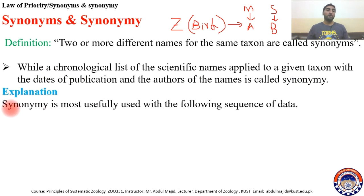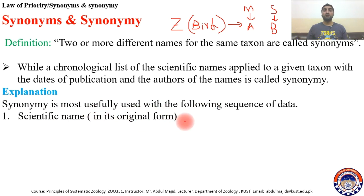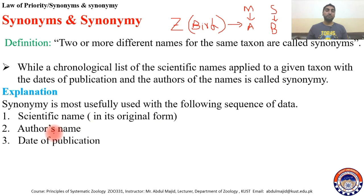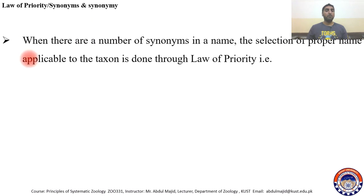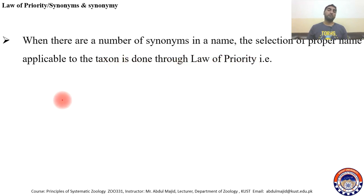Synonymy is most usefully presented with the following sequence of data: scientific name in its original form, author's name, date of publication and reference, type locality, and present location of the type — the last item being optional. When there are a number of synonyms for a name, the selection of the proper name applicable to the taxon is done through the Law of Priority.